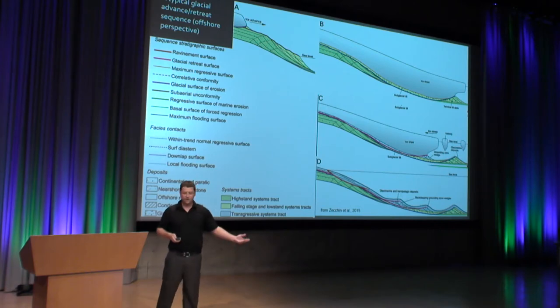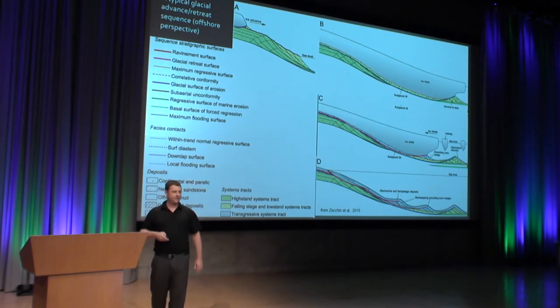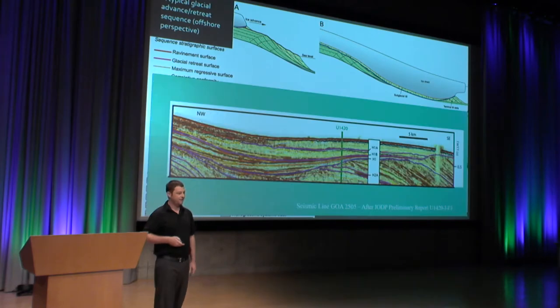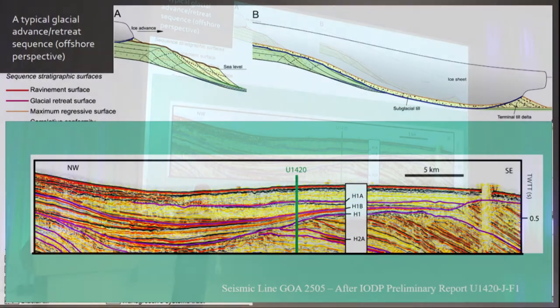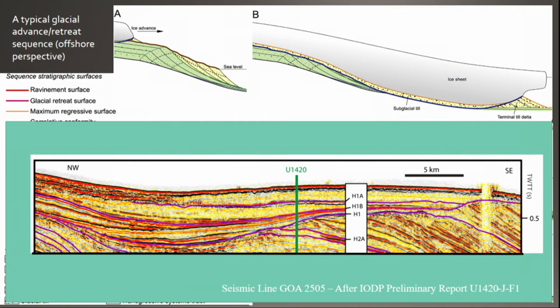I actually work with seismic data, and you'll see some of it today. This is a seismic line from the Gulf of Alaska. You can see it matches these patterns pretty well. You can see here a big erosional surface as well as some subglacial till, probably in these zones.